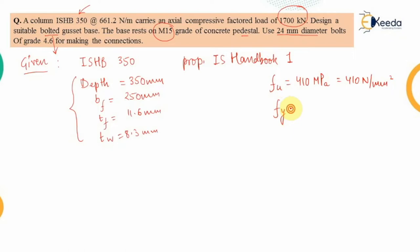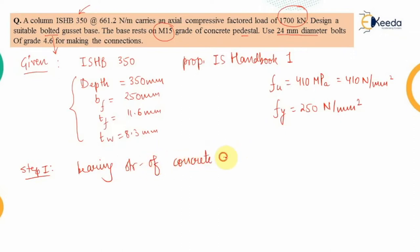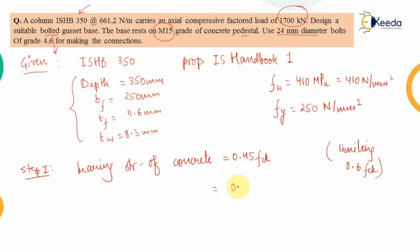The yield strength for this steel is 250 N/mm². As per Step 1, we find the bearing strength of the concrete. The bearing strength is given by 0.45 fck, while the codal provision per IS 800:2007 says it must be 0.6 fck. With M15 concrete, fck = 15, so the bearing strength = 0.45 × 15 = 6.75 N/mm².